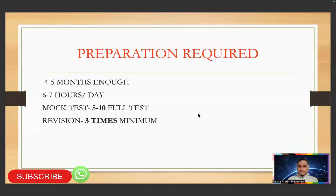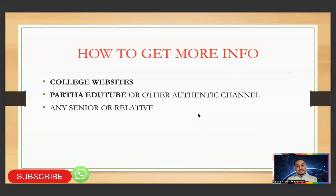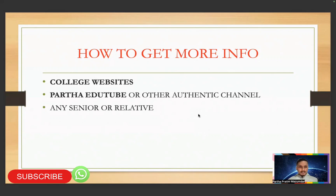Revision: minimum 3 times. For more info: college websites are the right source. I have already shown you that. Also this YouTube channel and other authentic channels. This channel will keep you updated. I was myself in an engineering college — 2017 batch, 2021 passout — so I will give you the correct and right info. You can also ask seniors or relatives, but trust only college websites and authentic channels.